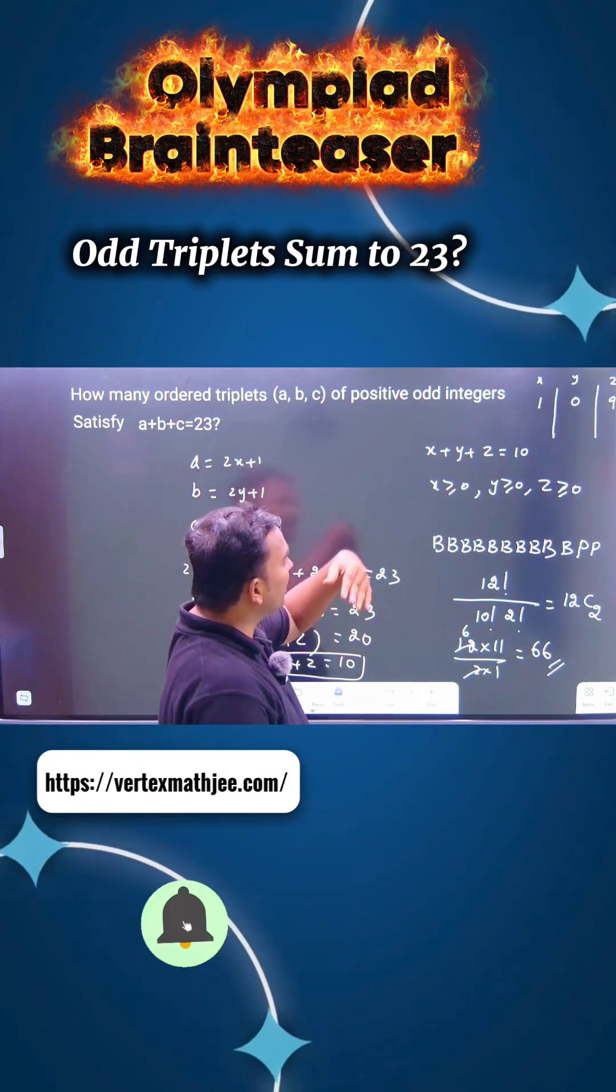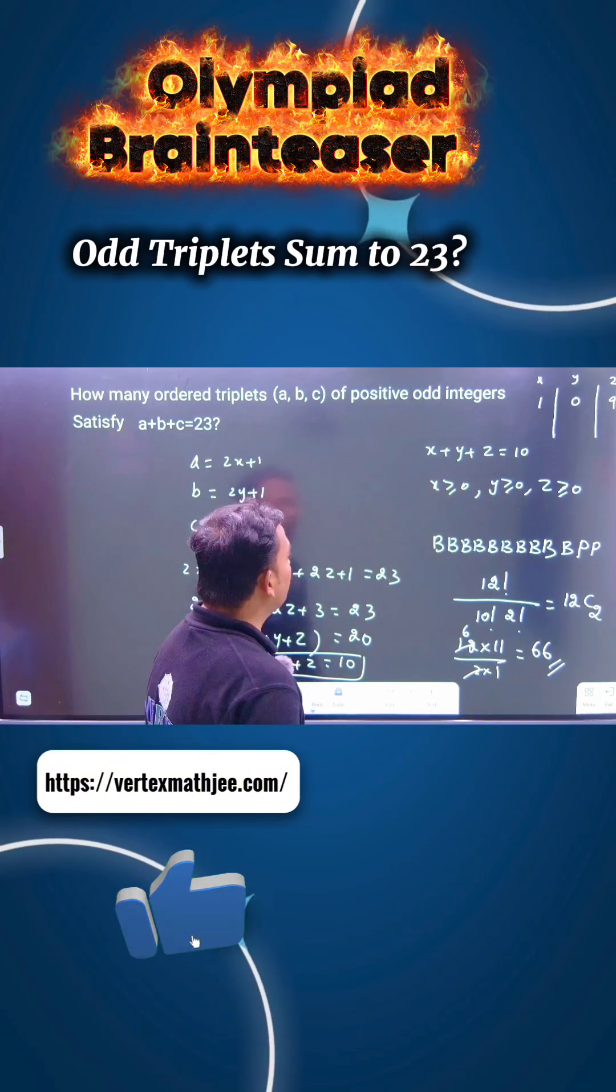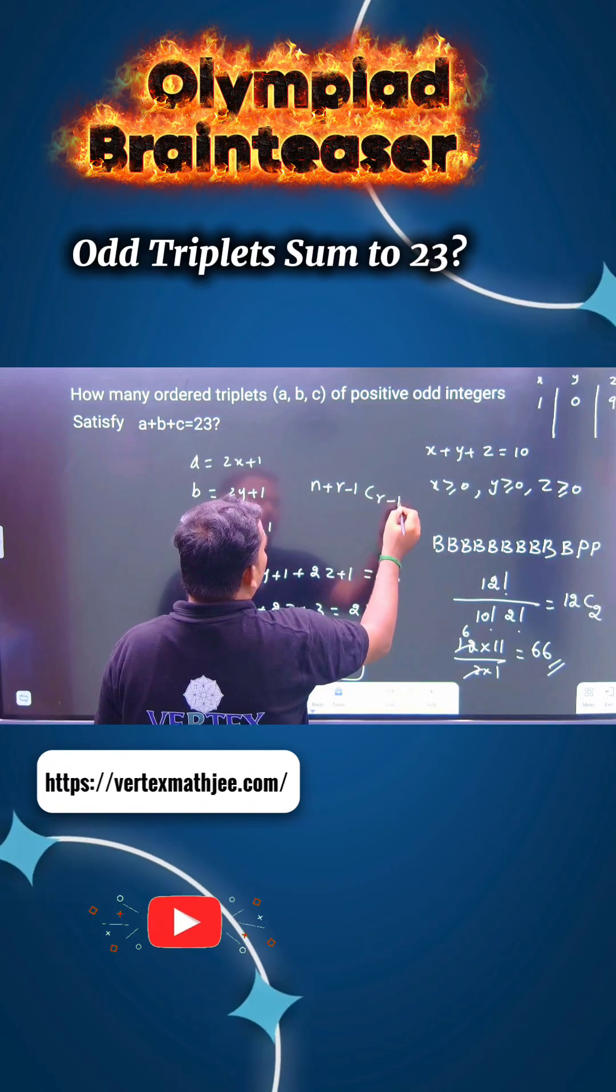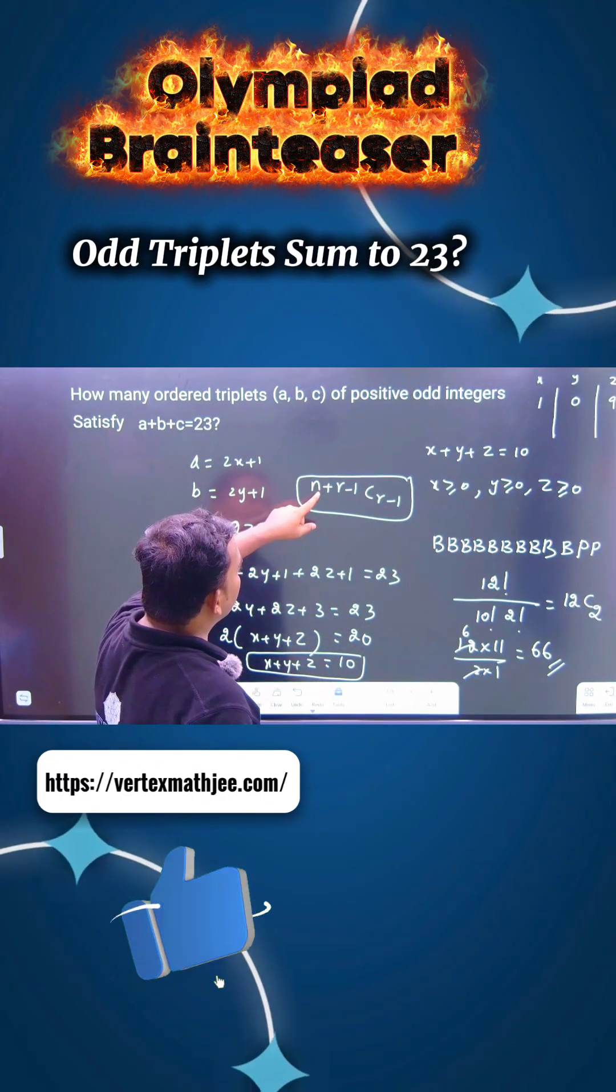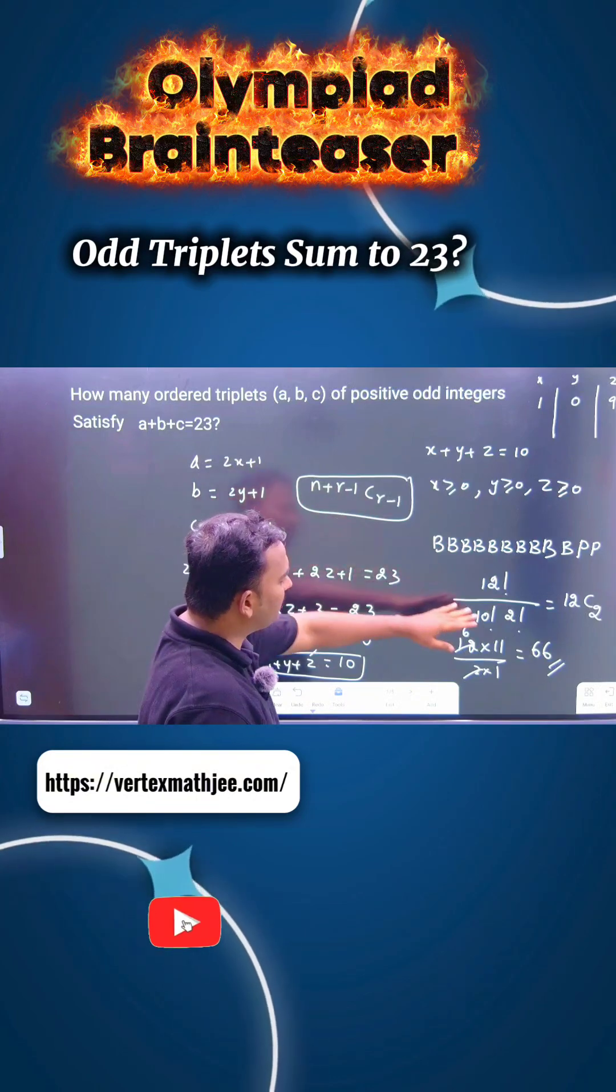Another way to change this question: how many non-negative integral solutions are possible? You know the formula: n plus r minus 1, C r minus 1. You can use this formula. Just apply: n is 10, r is 3, so 10 plus 3 minus 1, C 3 minus 1. The same answer will come.